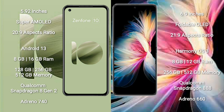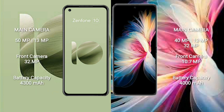The Huawei P50 Pocket comes with 8GB or 12GB RAM and 256GB or 512GB internal storage. It features the Qualcomm Snapdragon 888 processor and an Adreno 660 GPU. The Asus Zenfone 10 has a rear dual-camera setup of 50MP plus 13MP and a front camera of 32MP.